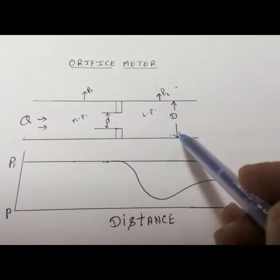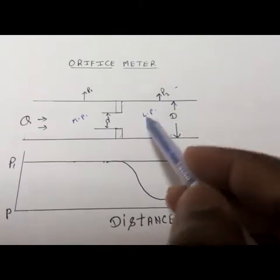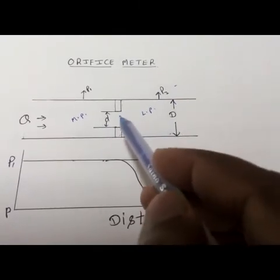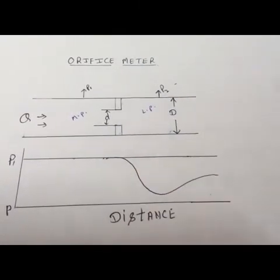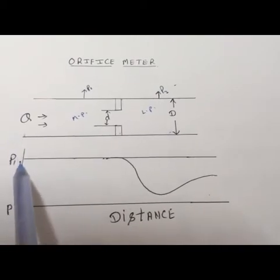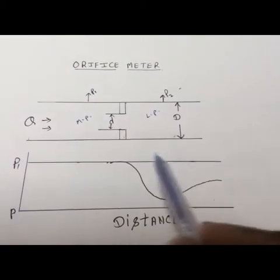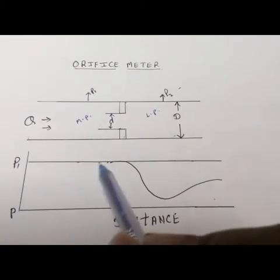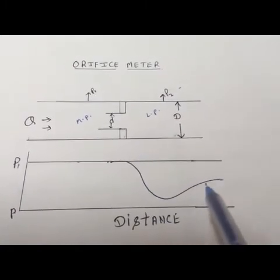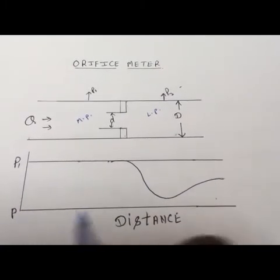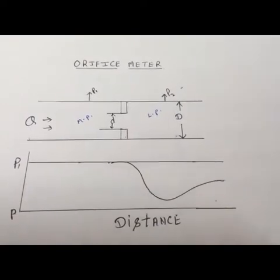This is the larger diameter — this is the diameter of the pipe — and this is the diameter of the orifice meter. Here you can see the pressure line, how it decreases or increases, and this is the distance travelled by the flow.